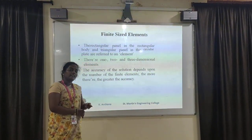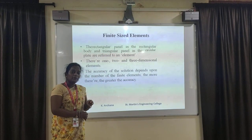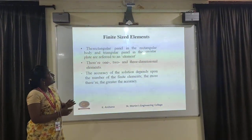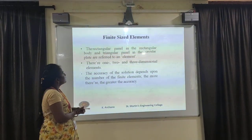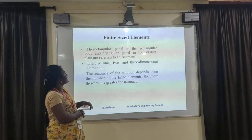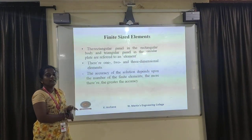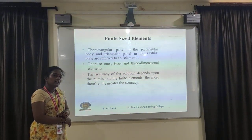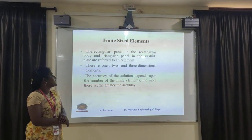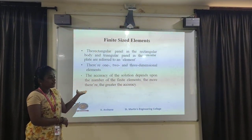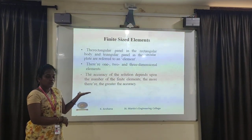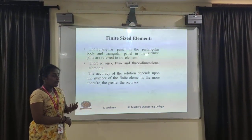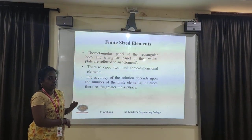Finite-sized elements include triangular, circular, and square shapes. The rectangular panel in the rectangular body and the triangular panel in the circular plate are referred to as elements. There are one-, two-, and three-dimensional elements. The accuracy of the solution depends on the number of finite elements — the more elements, the greater the accuracy.